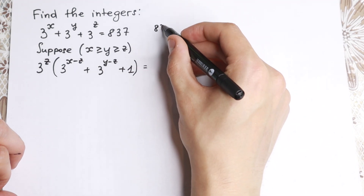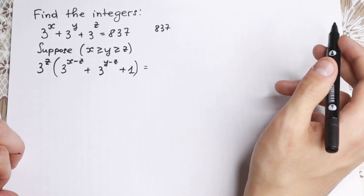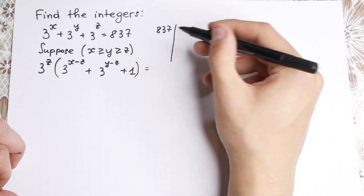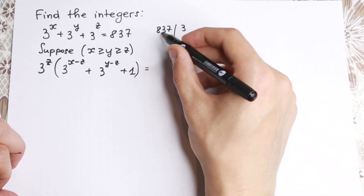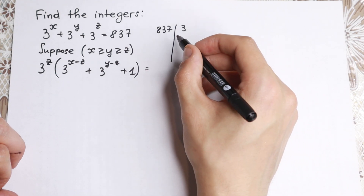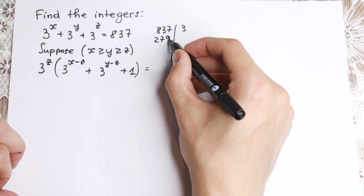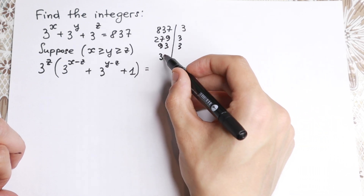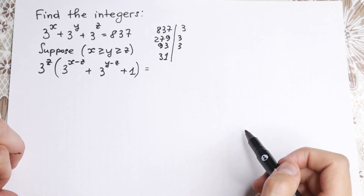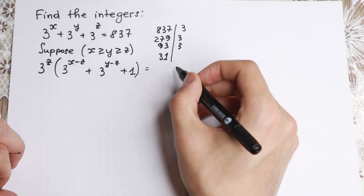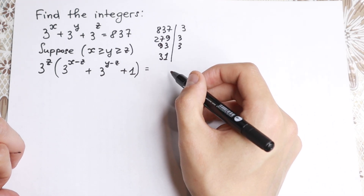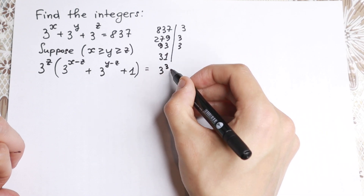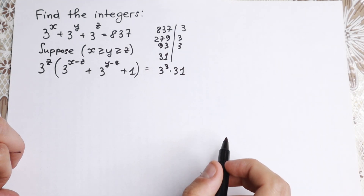We have 8837. We can write this number in another way. This number is divisible by 3 — the digit sum confirms it. If we divide by 3, we get 2879. Divide by 3 again, we get 93. Divide by 3 once more, we get 31. So 8837 can be written as 3 cubed times 31.